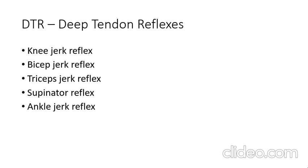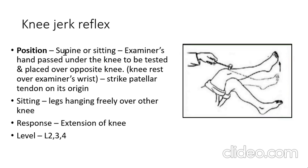Deep tendon reflexes are monosynaptic reflexes. We will cover knee jerk, bicep jerk, tricep jerk, supinator, and ankle jerk. For the knee jerk, the position is supine or sitting with the leg hanging freely. Strike the quadriceps tendon just below the patella; quadriceps contraction occurs, resulting in extension of the knee. The level is L2, L3, and L4.